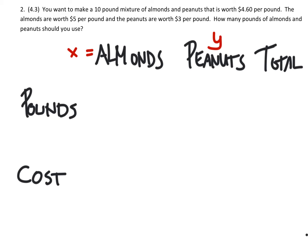I'm going to define my variables this way: I'm going to say that x is almonds and peanuts is going to be a y value. When we set up the pounds, we don't know how many pounds of almonds we have, we don't know how many pounds of peanuts we have, but we know if we combine them together that we should end up with 10 pounds of the mix.